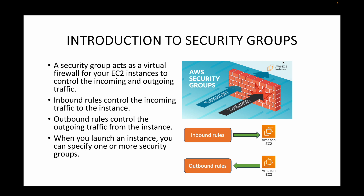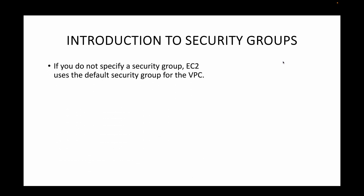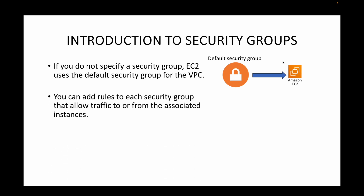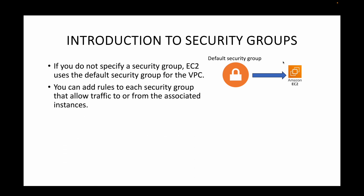Whenever you launch an EC2 instance, you need to specify one or more security groups — they are mandatory. Without a security group you cannot launch an EC2 instance. If you don't specify one, a default security group is used for the particular VPC you are working with. We use rules to define what inbound or outbound traffic you want to allow.